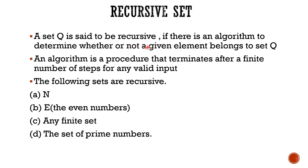For one set to be recursive, we need an algorithm — a procedure that terminates after a finite number of steps for any valid input. It's a finite sequence of steps. We have a set Q and we have an element in our hand. Whether or not that element is in the set, we have an algorithm to determine that.